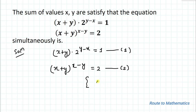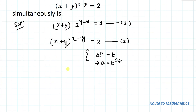We know the exponential rule: if a to the power n equals b, then we can write a equals b to the power (1 by n). By applying this exponential rule to equation 2, we can write x plus y equals 2 to the power (1 by x minus y).